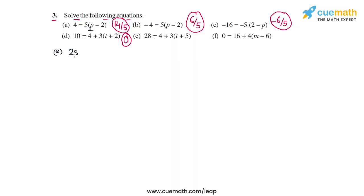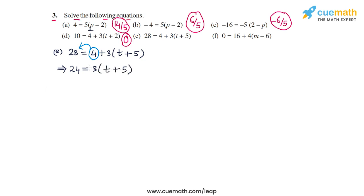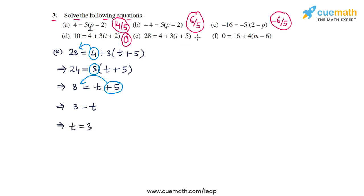In part e, the equation is 28 = 4 + 3 times (t + 5). We transpose the 4 to the left side, giving 28 - 4 = 24. We then divide both sides by 3, getting 8 on the left and t + 5 on the right. Transposing the 5, we get 8 - 5 = 3 on the left and t on the right. So the solution is t = 3.